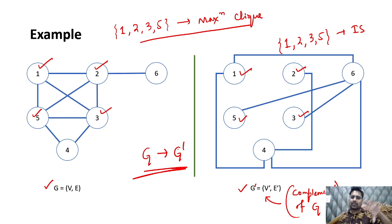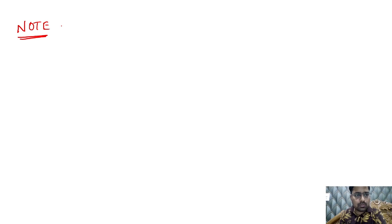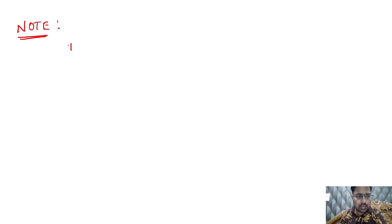So once G converts to G' (the complement), the clique in G becomes the independent set in G', and vice versa. Vice versa is also possible — independent set to clique reduction and clique to independent set reduction are both possible.